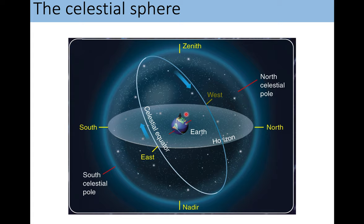Another important term to know is the zenith. The zenith is the spot on the celestial sphere that is directly above you. If you move, the zenith moves. The nadir is the spot on the celestial sphere directly beneath you — you will never be able to see the stars beneath you. If you draw a line straight from the zenith, it intersects the horizon at a 90-degree angle, so the zenith is directly above your head.